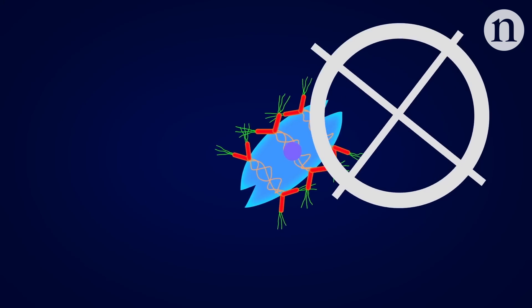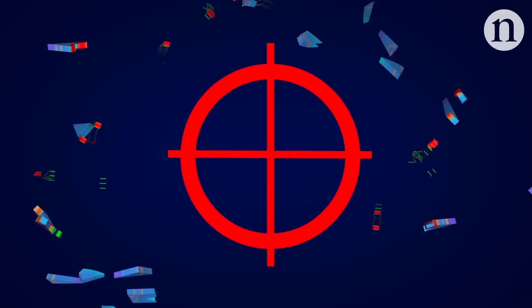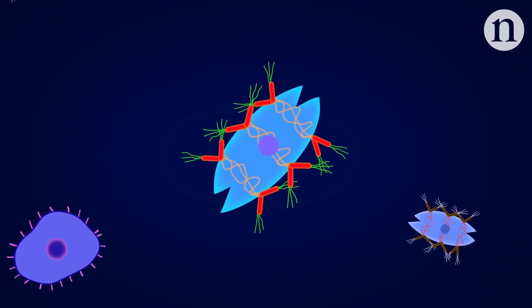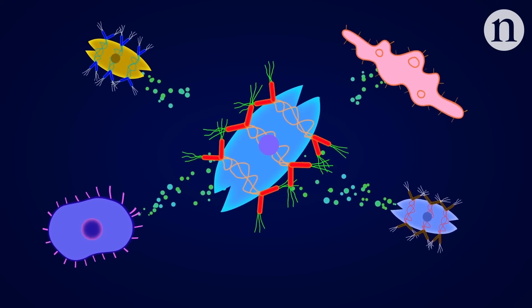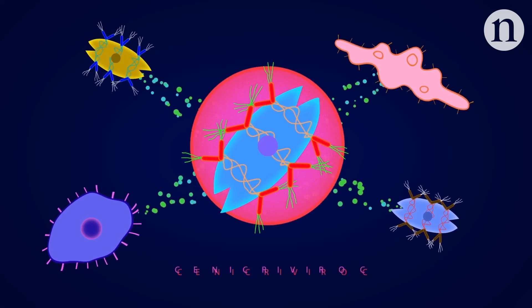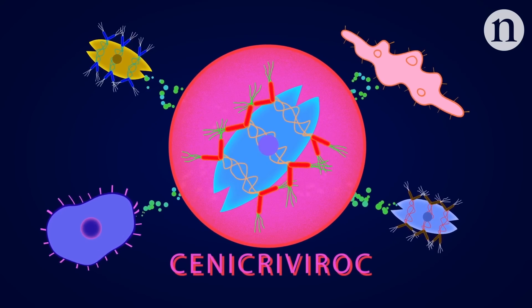So researchers are aiming their sights first and foremost at myofibroblasts. One strategy is to target the messenger molecules which coordinate their activation. These are released by damaged liver cells and immune cells and could be targeted by new drugs. One example is a drug called Senicriviroc that blocks receptors for pro-fibrosis messengers called cytokines.